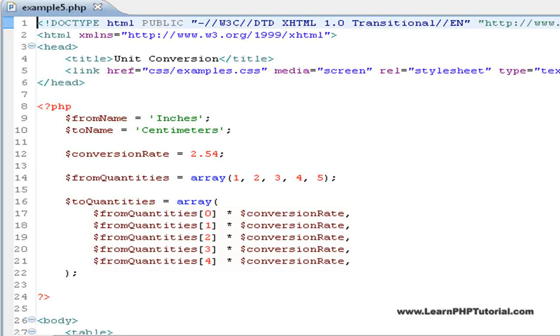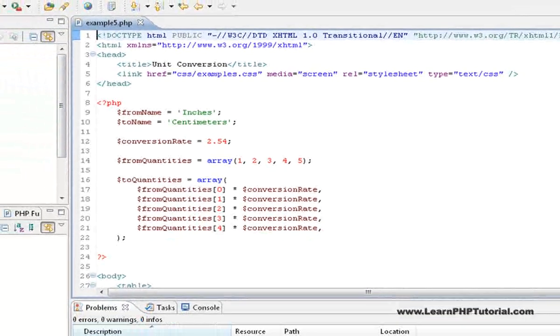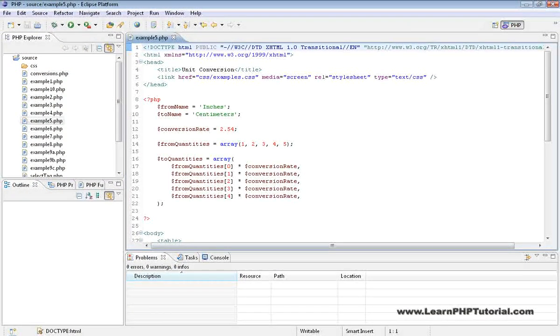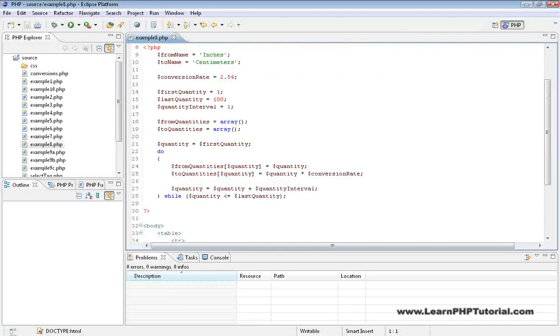What if we needed a table with more than five conversions? What if there were 100, or even 1000? For more than a few elements, we'd need to do a lot of typing. This is where loops come in. Example 8 shows us just how this works.